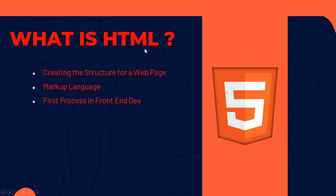HTML stands for HyperText Markup Language, used to structure a web page and its contents — for example, with paragraphs, bulleted lists, images, or data tables. HTML is not a programming language; it's a markup language, which is specifically used to label parts of a document for what they are rather than how they should be processed. Other well-known markup languages include XML (Extensible Markup Language).